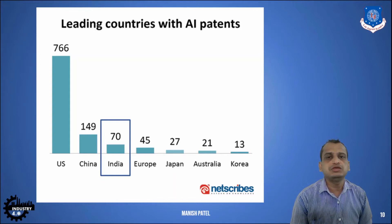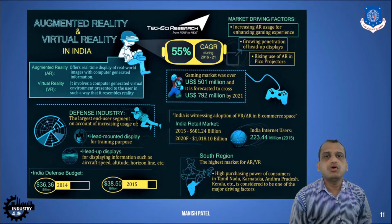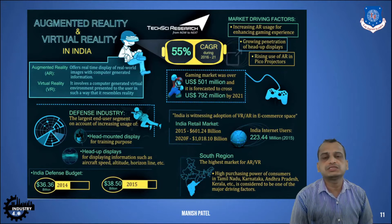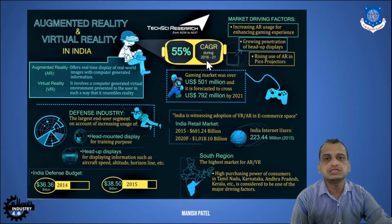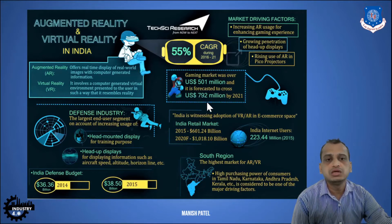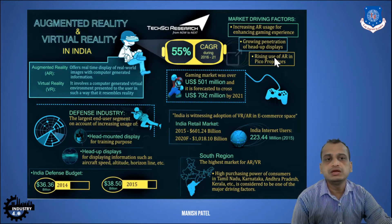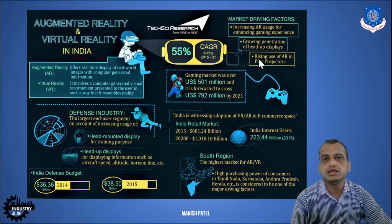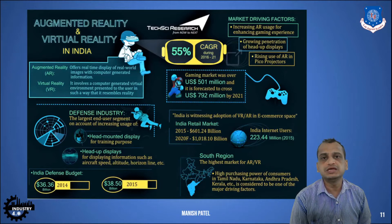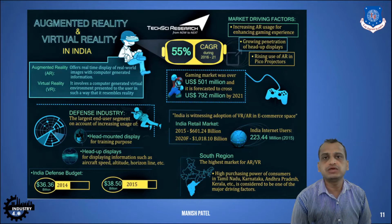The augmented and virtual reality market, also a component of Industry 4.0, shows almost 55 percent CAGR from 2016 to 2021. The gaming market is almost 500 million US dollars, forecasted at nearly 792 million dollars by end of 2020. The driving force is gaming, along with head-mounted displays such as HTC displays and Google Cardboard, which are used for experiencing virtual reality and are already available in the market.